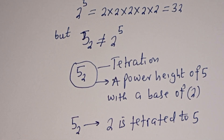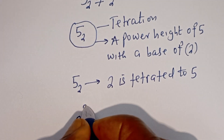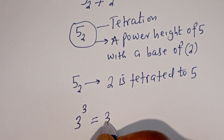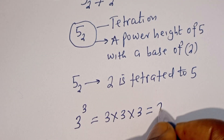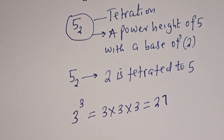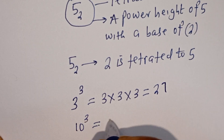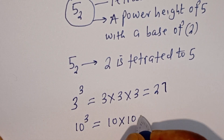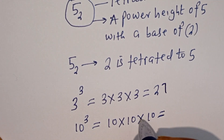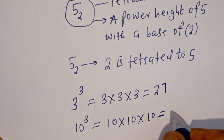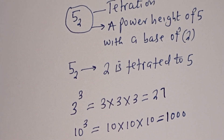Now let's compute some examples. If you have three to the power of three, this is equal to three multiplied by three multiplied by three, and this is 27. Now if you have ten to the power of three, this is equal to ten multiplied by ten multiplied by ten, which is 1000.